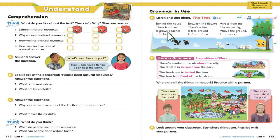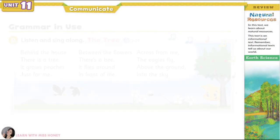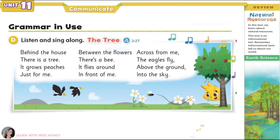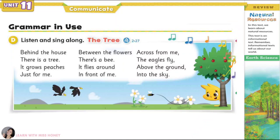Page 113. Grammar in Use. Listen and sing along: The Tree. Behind the house there is a tree, it grows peaches just for me. Between the flowers there's a bee, it flies around in front of me. Across from me the eagles fly, above the ground into the sky.